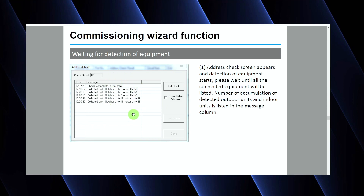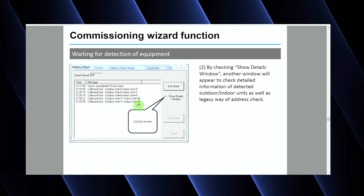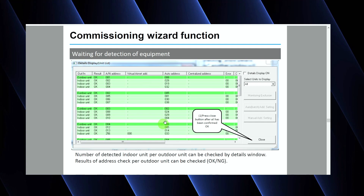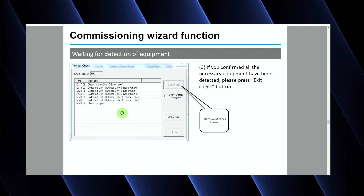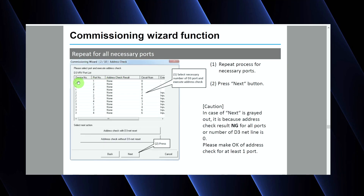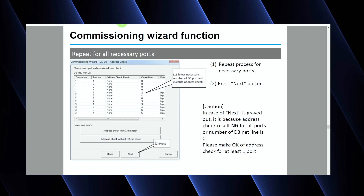It should go ahead and start this window, which is checking for the equipment. This will take some time — you need to be patient. It's going to start the check and then start collecting all of the data. In this particular case, we had 11 outdoor units with 38 indoor units on the system. Wait for it to complete before you click any buttons on the right-hand side. If you want to see more information about what the unit has seen, you can click the 'Show Details' window and it's basically going to show you all of the data that it has seen so far. Go ahead and click 'Close' to go back to the previous screen. Once the check is complete, you can exit the check and close out of this window. If you have any other ports to check, do that now and repeat the process. Once you're all done, click 'Next' to go to the next step of the wizard.